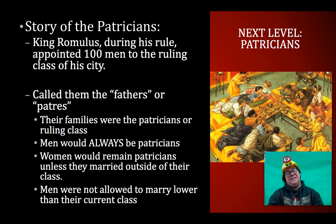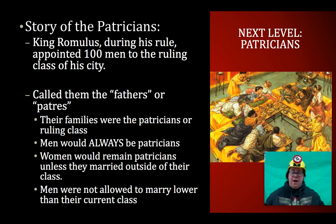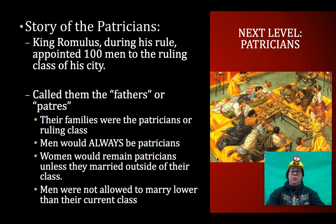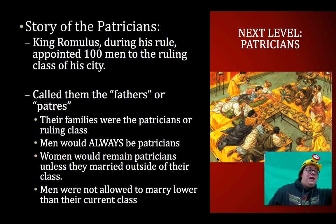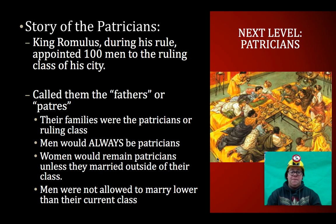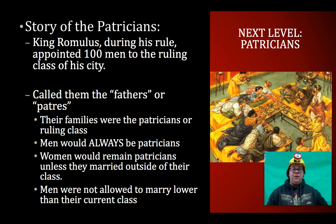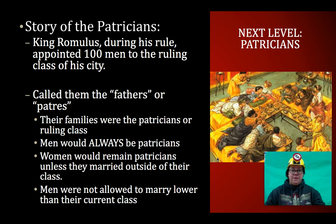The next level: the patricians. King Romulus during his rule appointed 100 men to the ruling class of the city. Those ruling class were called the fathers, or the patras, of Rome. The patras of Rome and all of their families were considered the ruling class from then on for all eternity for the Roman Empire. Which meant if your great-great-great-great-grandfather was one of the patras, you were now a member of the patricians — the fathers of the family — and you had full citizenship rights. Plebeians did not necessarily have full citizenship rights, and that was a pretty big deal.